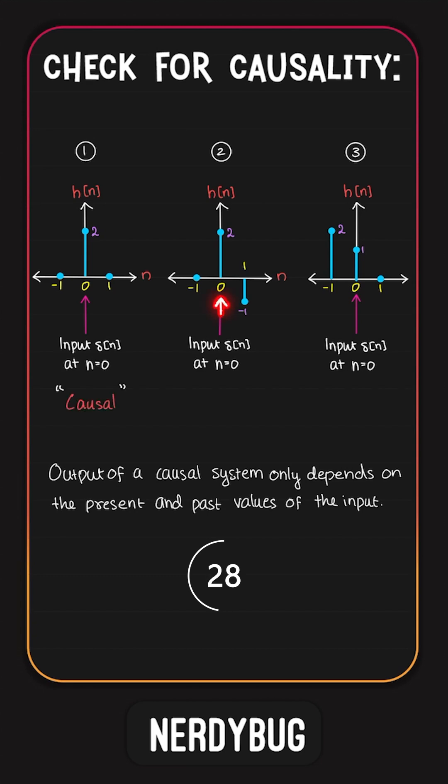In the second case, the input is given at n equal to 0. Output comes at n equal to 2 and n equal to 1. This depends on a present input and this depends on a past input. So this is also causal.